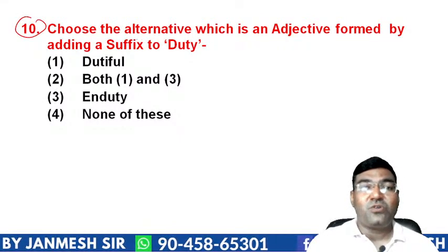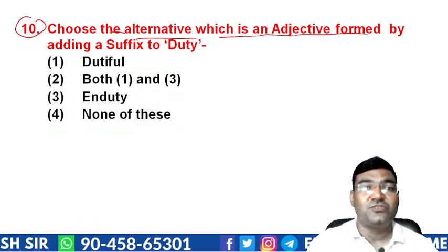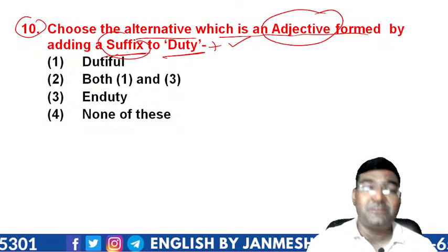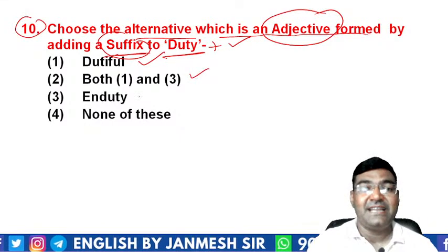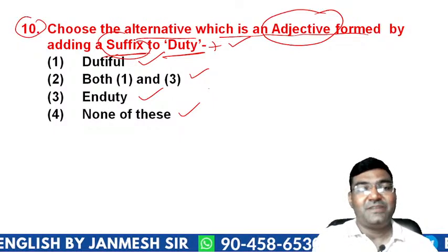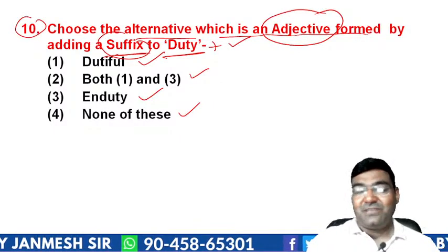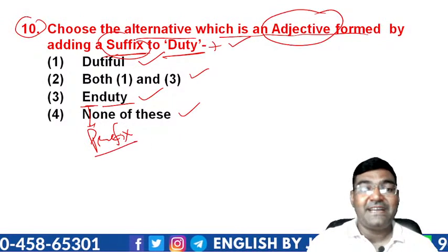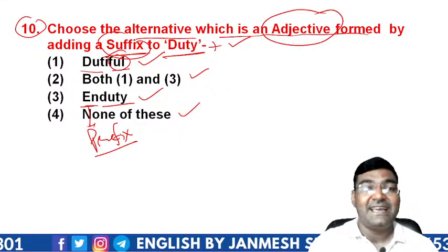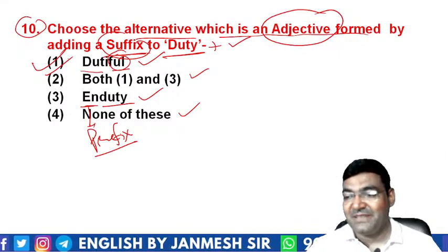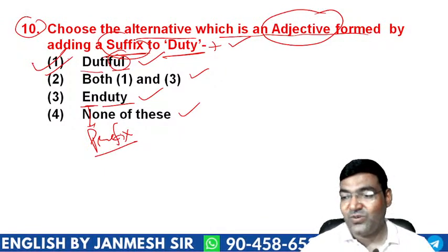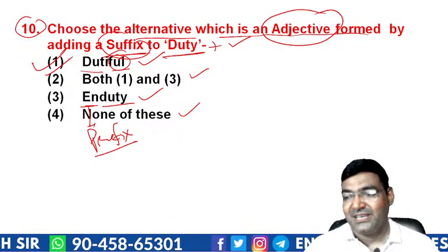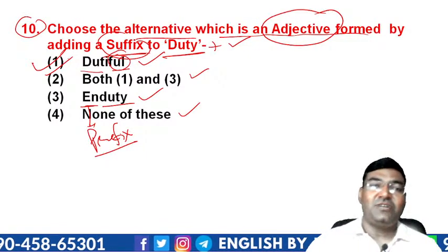Question 10: choose the adjective formed by adding a suffix to 'duty'. Options are 'dutiful', 'both one and three', 'unduty', or 'none of these'. 'Unduty' uses a prefix, not a suffix. 'Dutiful' is formed by adding the suffix '-ful' to 'duty', making it an adjective. So the answer is option 1 — 'dutiful'. Maximum students answered correctly.